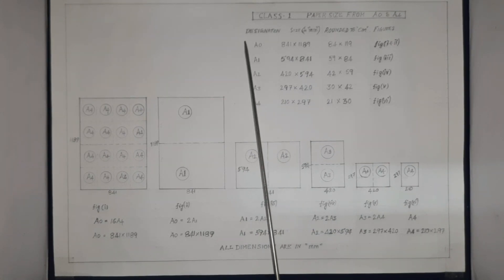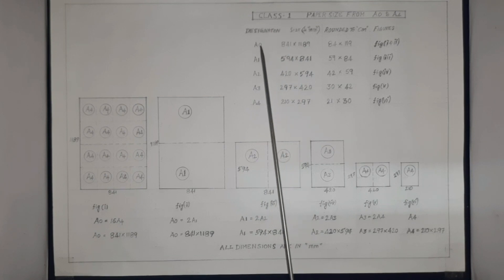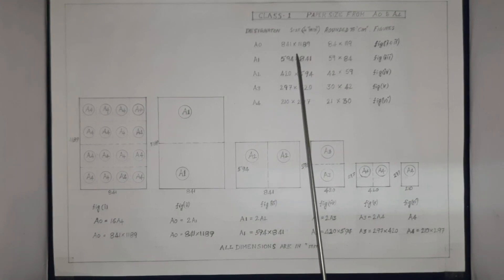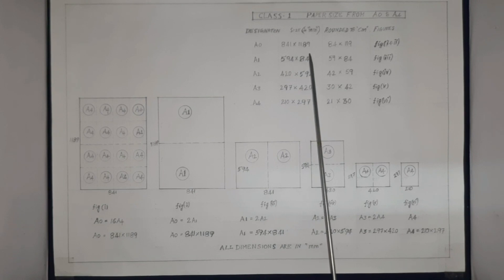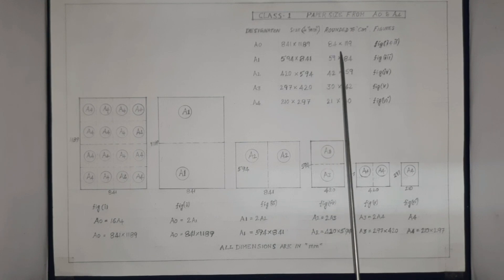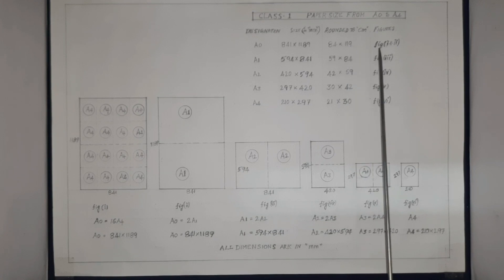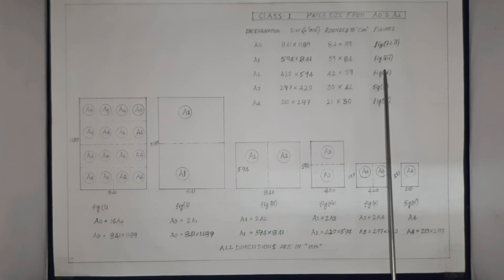Refer to the table shown here. The first column gives the designation of the various papers. The second column gives the corresponding sizes of the papers in millimeters. The third column is given for understanding purposes only — rounded off in centimeters. The fourth column gives the various figures used to specify the sizes in the drawing.